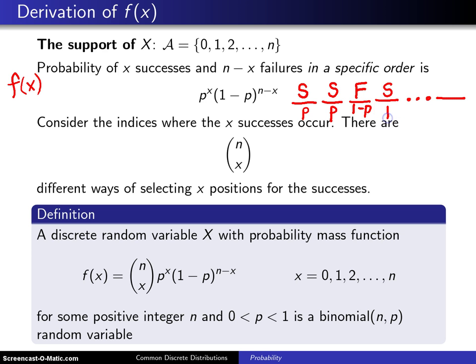Then maybe a success with probability p, all the way down to a failure at the very end with probability 1 minus p. Well, what is the probability of this specific string of successes and failures? If there are x successes, then there have to be n minus x failures.